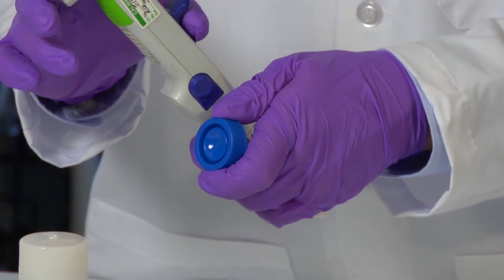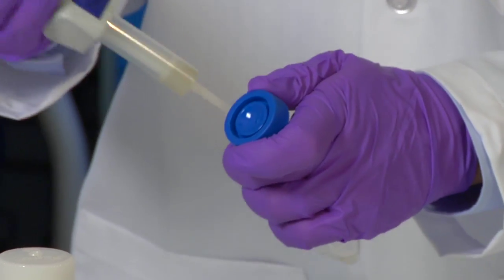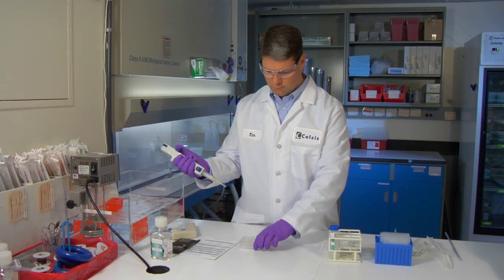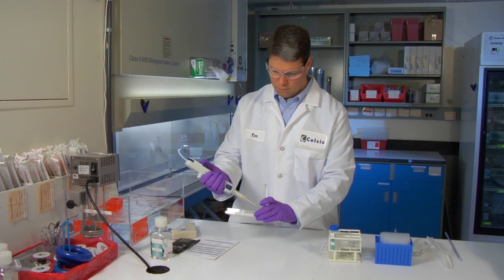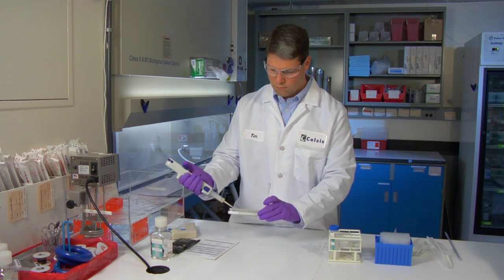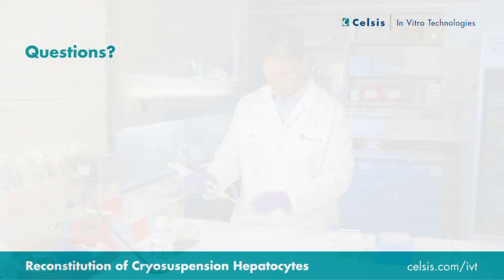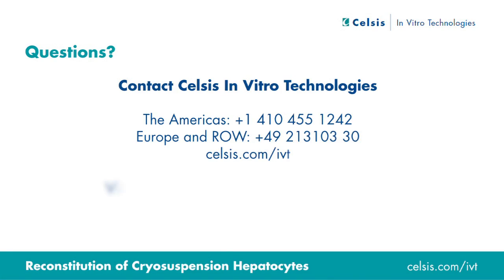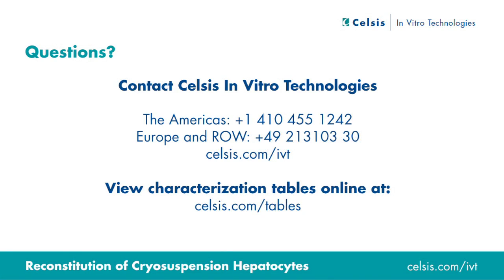The reconstituted cells are now ready to be used in a metabolism suspension assay. Simply aliquot the cells into the plate format of your choice. Remember, if you want to use a different type of plate or are using the cells for uptake transporter studies, your target and reconstituted numbers may be different. If you have any questions about anything shown in this video, please contact CELSIS In Vitro Technologies or visit our website. Full characterization of available lots is online at celsis.com/tables.